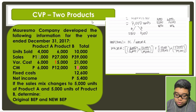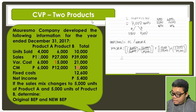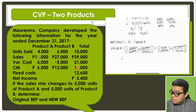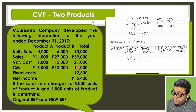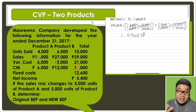We can cancel terms, leaving 6,000 divided by 39,000 plus 12,000 divided by 39,000. Our weighted average contribution margin ratio is 0.461538 — not a perfectly clean ratio, but that's what we use.